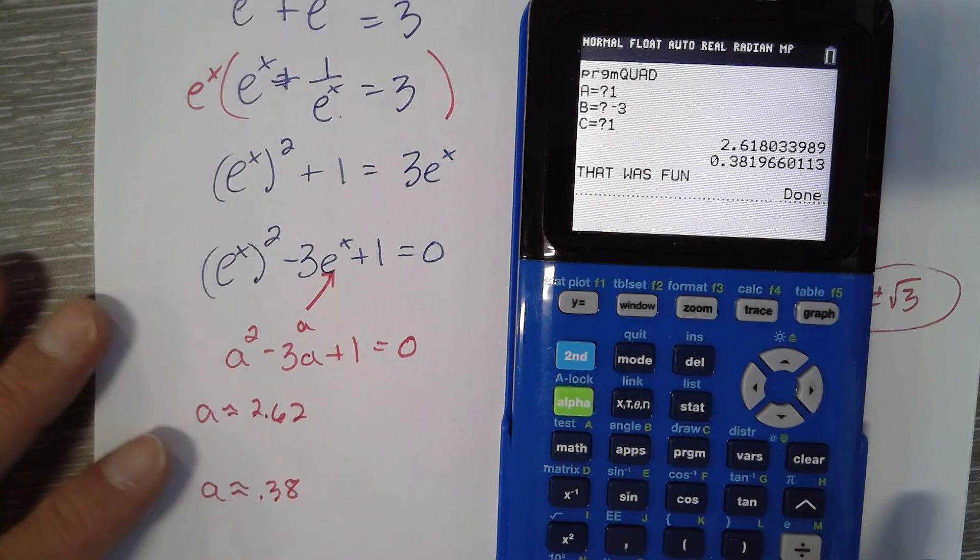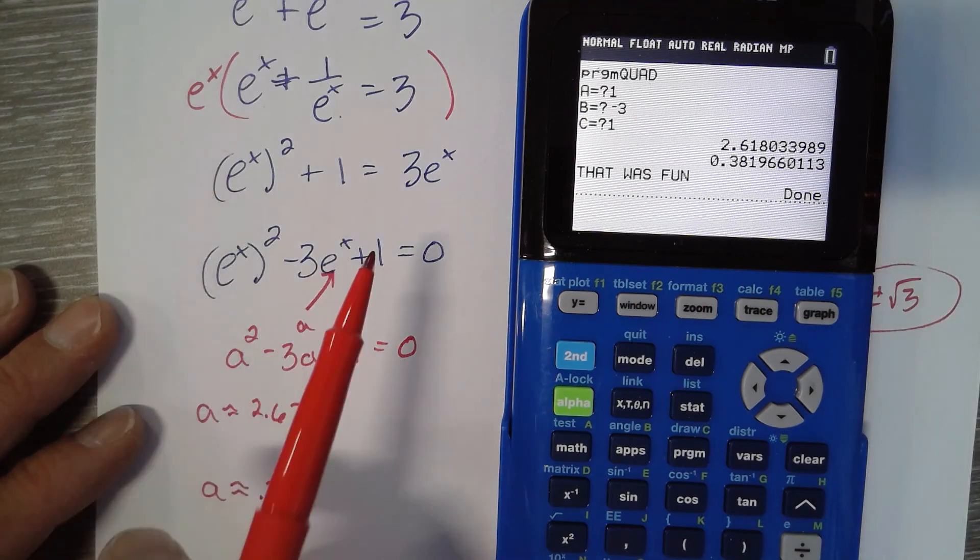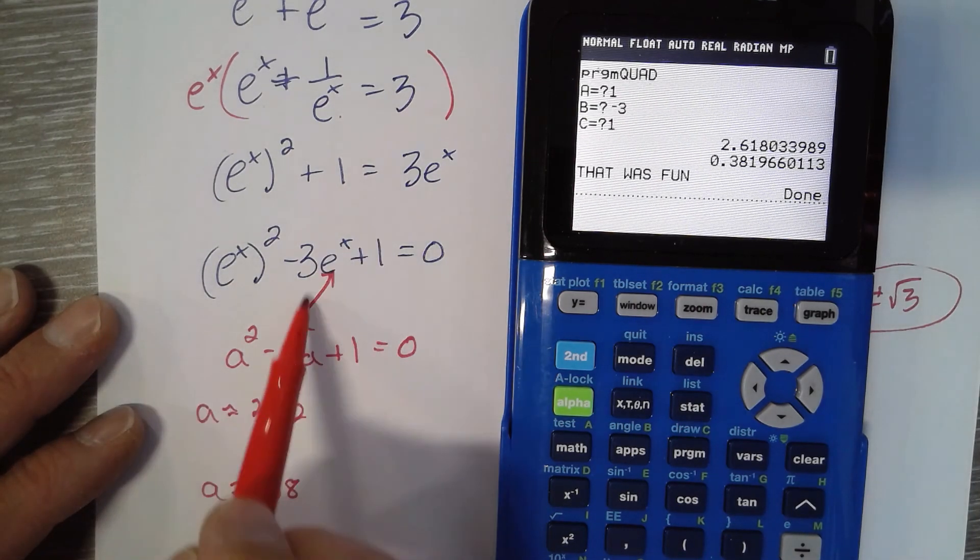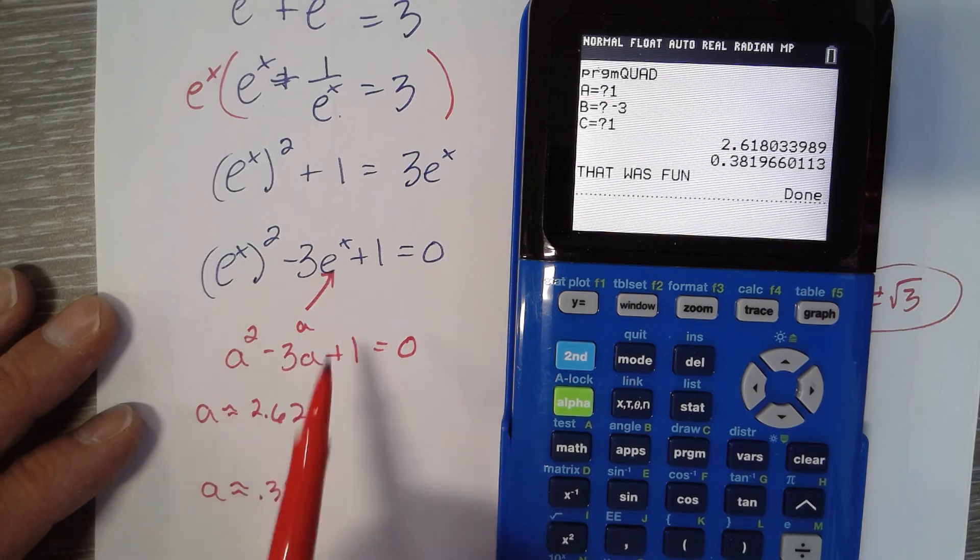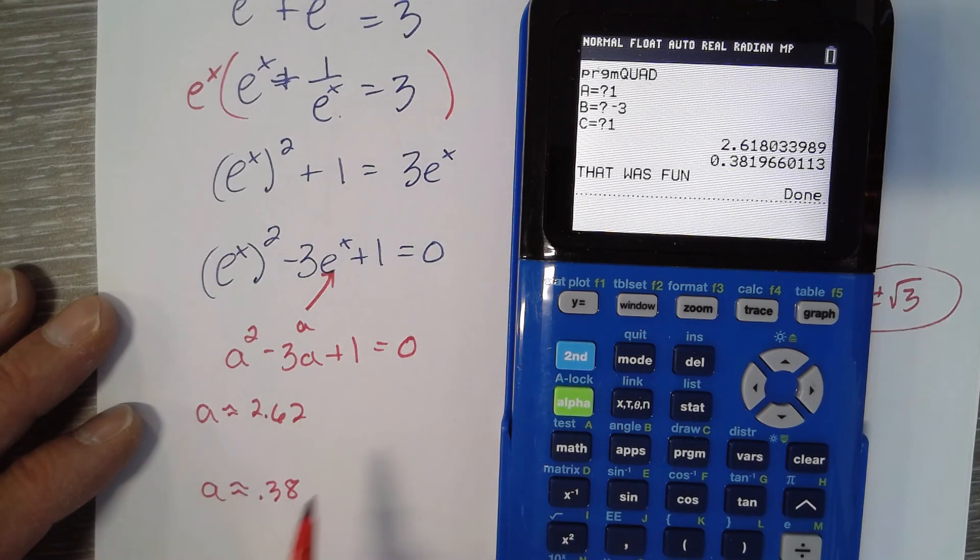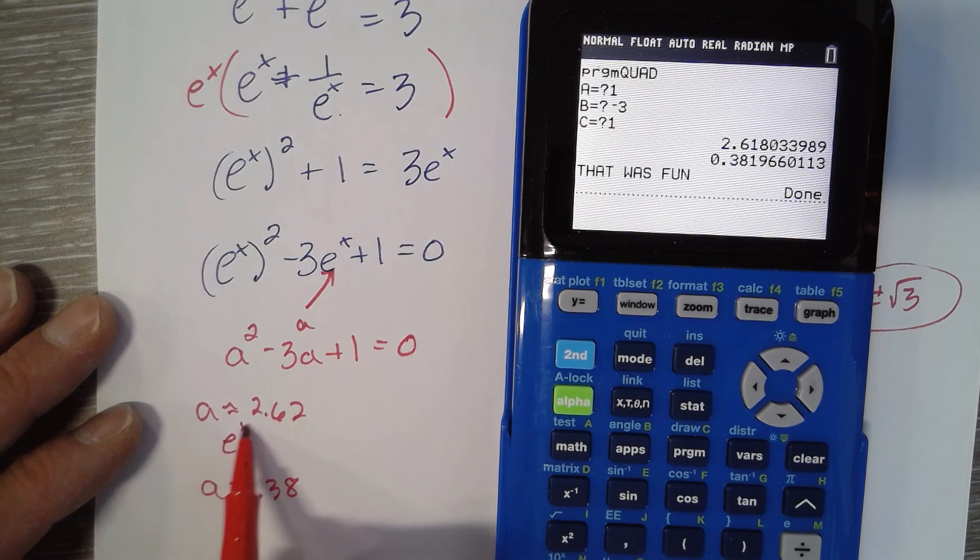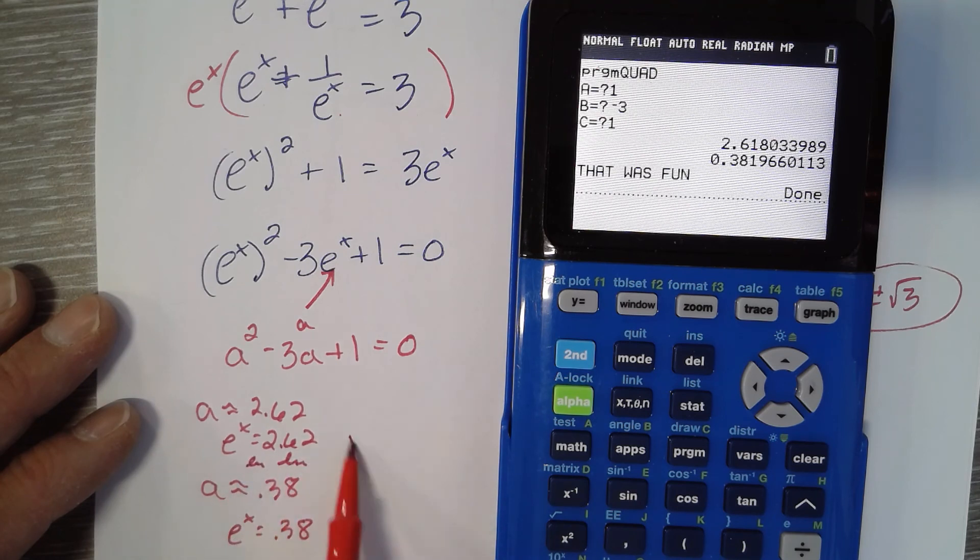We want X. So we have to find out what we define A to be. A is E to the X. So then we'd say E to the X equals 2.62, and E to the X equals 0.38. Then you can do a natural log of each side. So X equals approximately a natural log of 2.62.